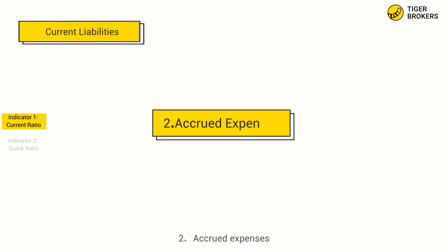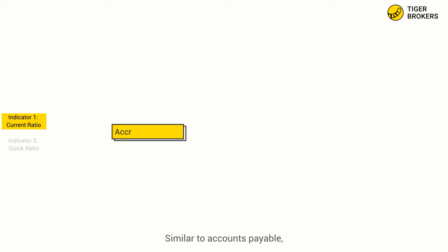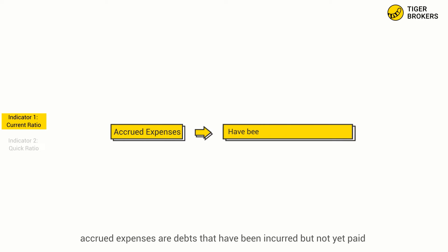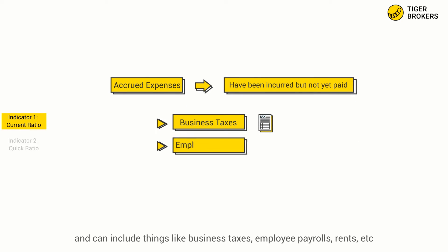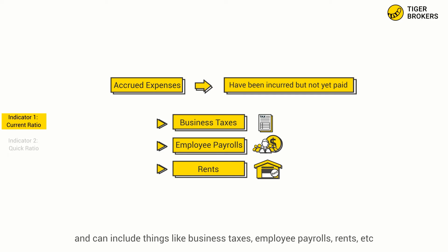2. Accrued Expenses. Similar to Accounts Payable, accrued expenses are debts that have been incurred but not yet paid, and can include things like business taxes, employee payrolls, rents, and so on.